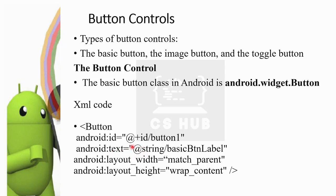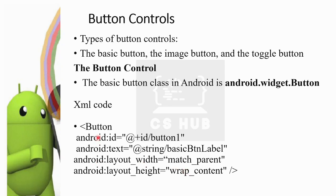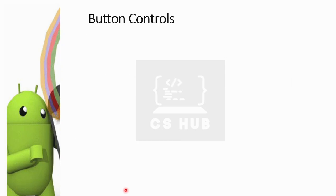If you want to use this code, you can use the string name for the button. You can use the basic button with the width and height parameters. If you want to use the ID, text, layout width, and height, you can use this code for the basic button.